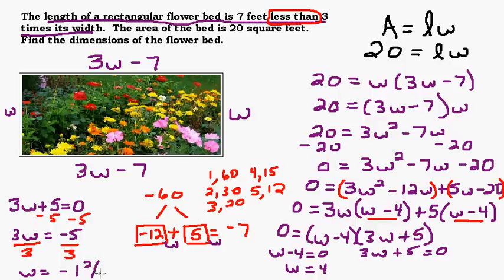And then to get w by itself, I'm going to divide by 3. So I get w equals negative 5 thirds, which is negative 1 and 2 thirds. So I'll write that over here. Now when you have a quadratic, you can, and a lot of times do, come up with two different solutions. So we came up with w equals 4 and w equals negative 1 and 2 thirds.